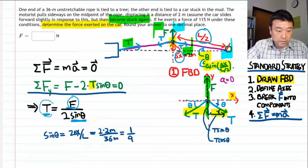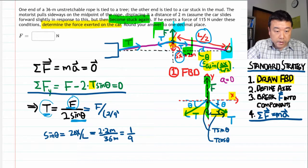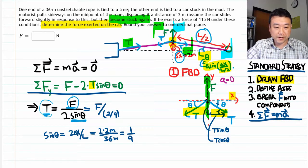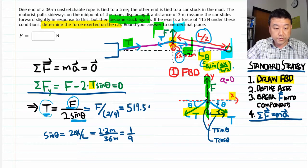Plugging that in, we get tension is the applied force divided by 2 over 9. So we are going to get a force multiplier of almost a factor of 4. Or, actually plugging in numbers, 517.5 newtons. It's quite a bit greater than the applied force. And this is a simple machine, similar to a mechanical lever that you might have seen in other contexts earlier.